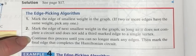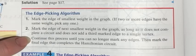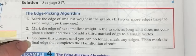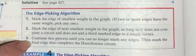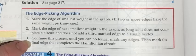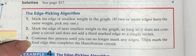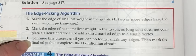Continue this process until you can no longer mark any edges and then mark the final edge that completes the Hamiltonian circuit. So you're going to go through and you're going to find the shortest one, the next shortest one, so on and so forth until you can complete the circuit.